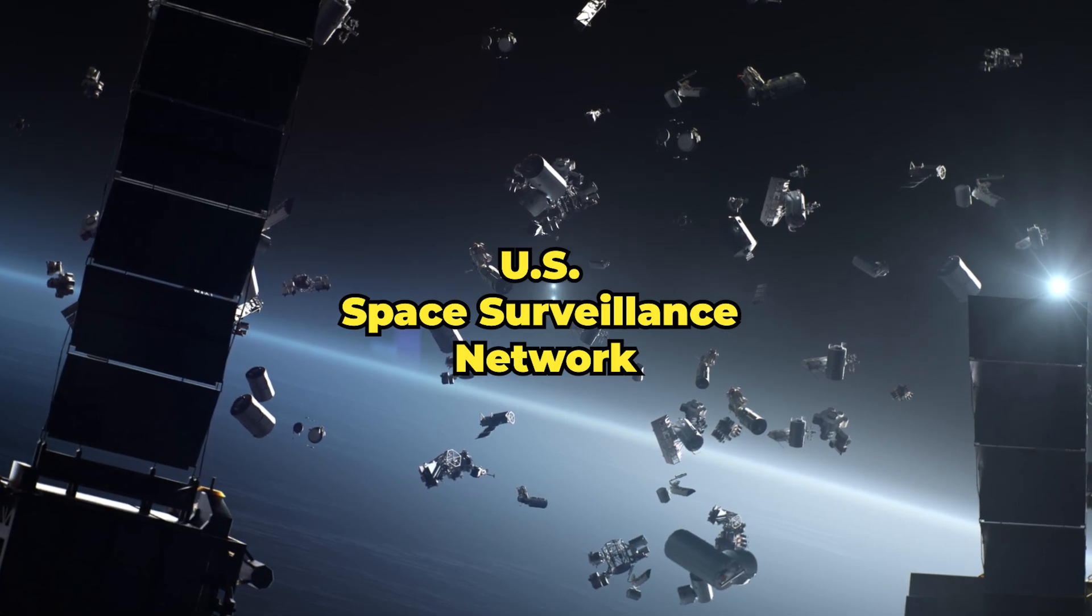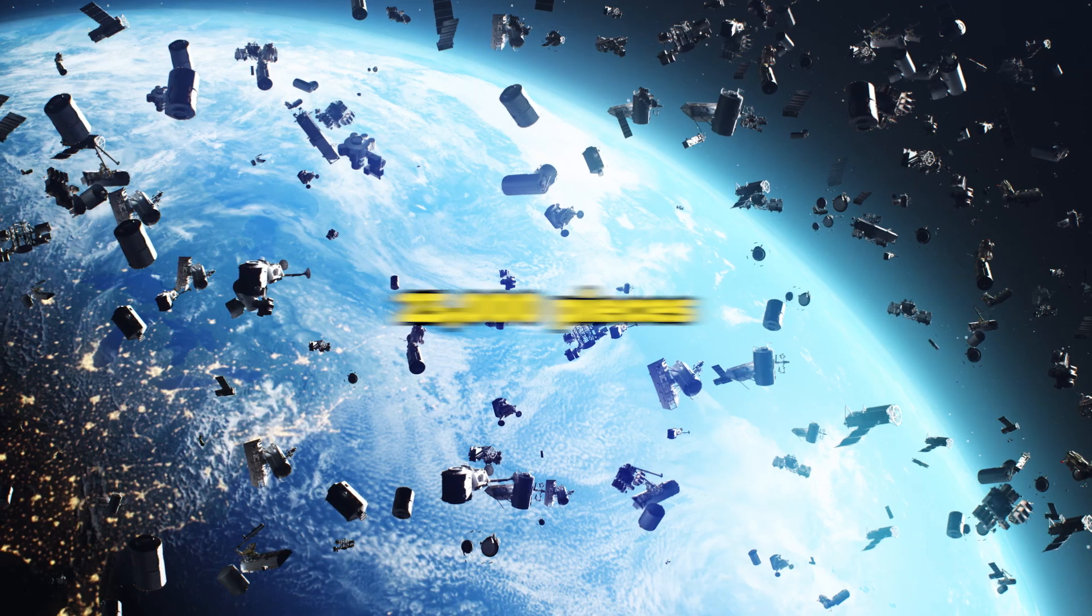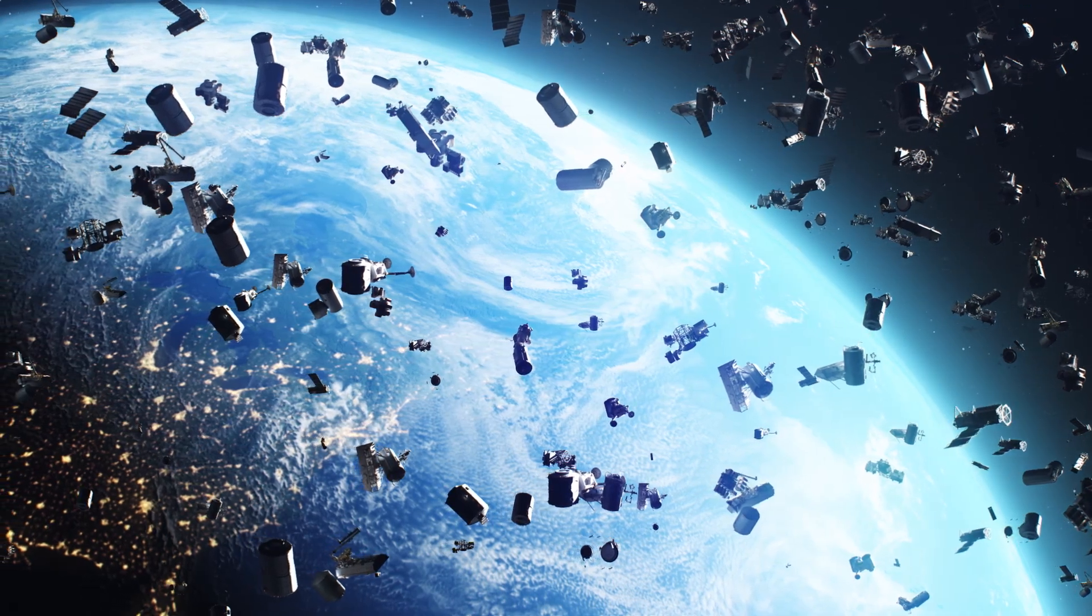The U.S. Space Surveillance Network keeps track of more than 23,000 pieces of orbital debris, each larger than a softball. However, millions of other pieces smaller than that are almost impossible to monitor.